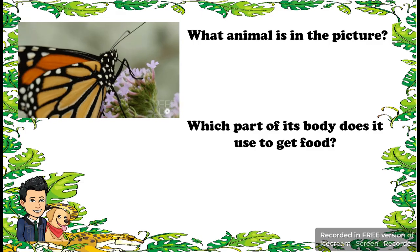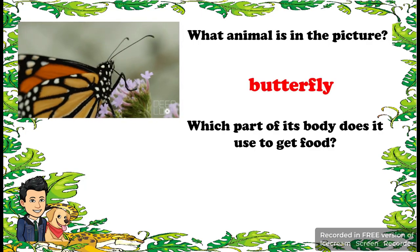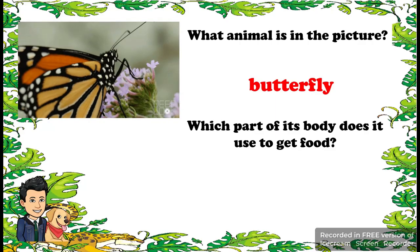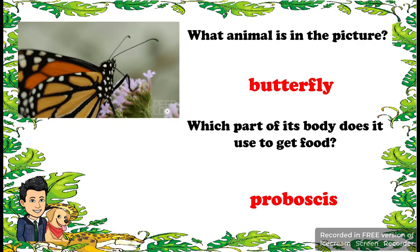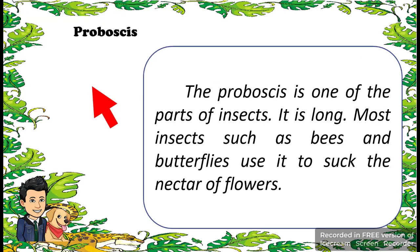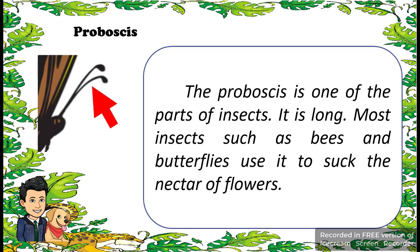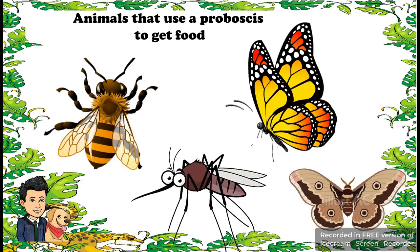What animal is in the picture? It is a butterfly. Which part of its body does it use to get food? Butterfly uses its proboscis. The proboscis is one of the parts of an insect. It is long. Most insects such as bees and butterflies use it to suck the nectar of the flower. Animals that use a proboscis to get food are butterfly, mosquito, bees, and flies.